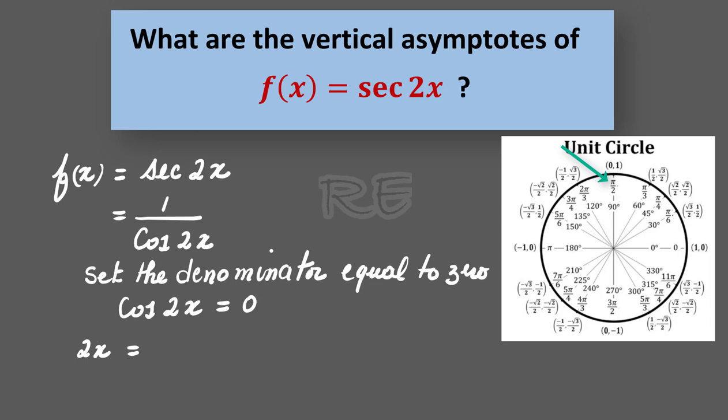Therefore, 2x is either equal to pi over 2, or 2x is equal to 3pi over 2. Values taken from the unit circle.